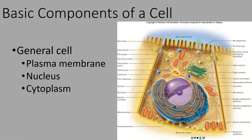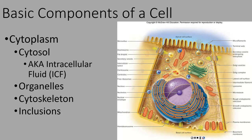Then we have all of the stuff inside the cell except for the nucleus — that's called the cytoplasm. The cytoplasm, in general, is the contents of the cell in between the plasma membrane and the nucleus. So when we look at this picture, if it's not the plasma membrane and it's not the nucleus, then it's the cytoplasm. We can look at that picture and see there's really a lot going on in the cytoplasm, so maybe we can be a little bit more specific — there are different parts to the cytoplasm.